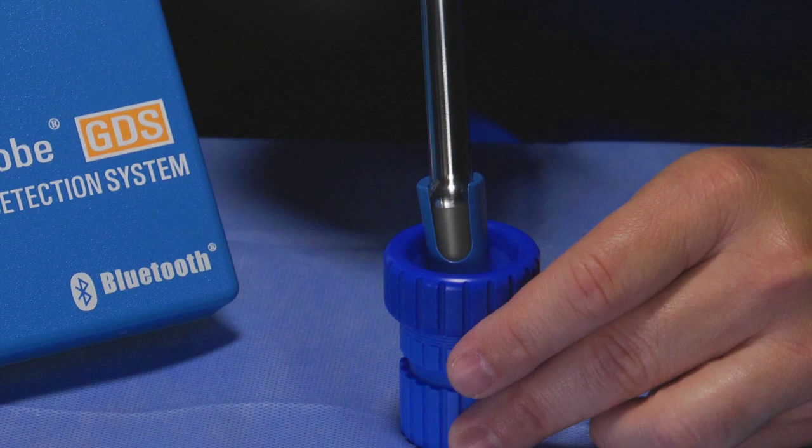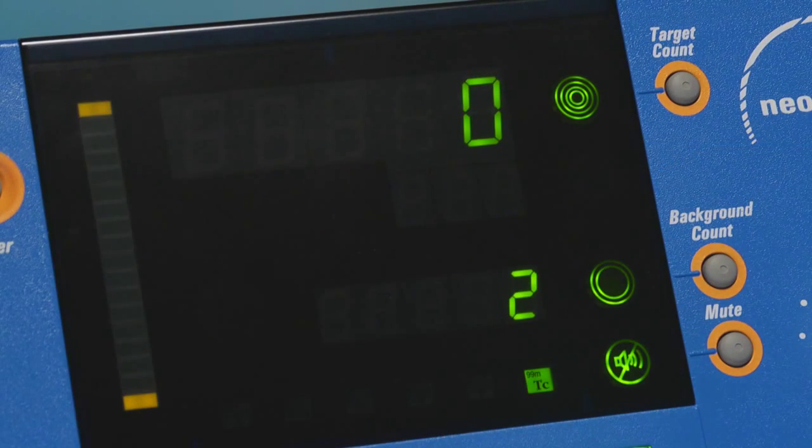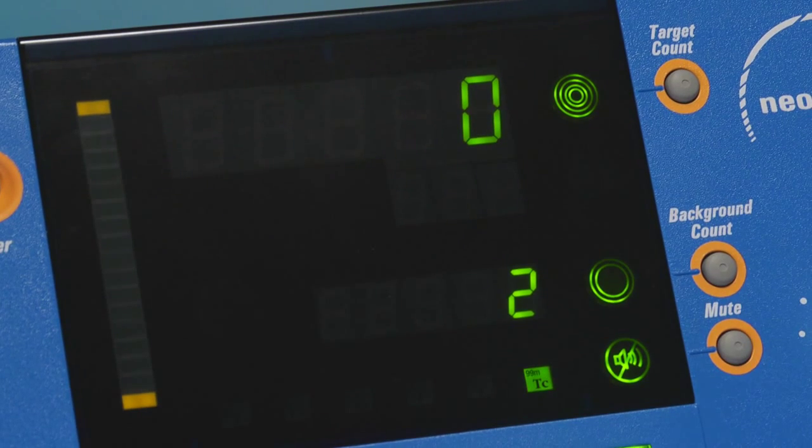Keep the probe stationary until the system beeps and the count bar fills from the bottom to the top. The system will then display the target count value for five seconds.